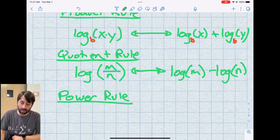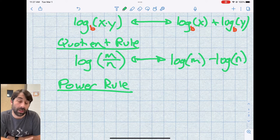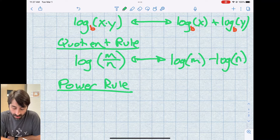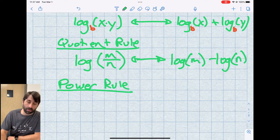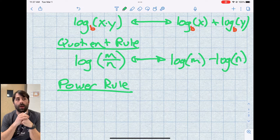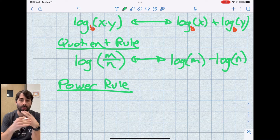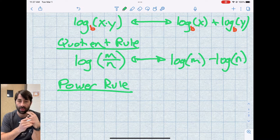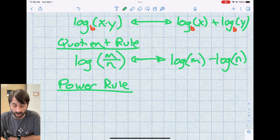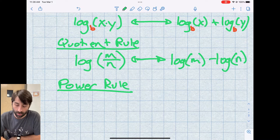And this rule we end up using a lot when we're solving log and exponential functions. What the power rule states is if there's an exponent inside of a log, that turns into a factor. So we end up multiplying the log by that exponent, and the exponent is no longer an exponent. And this is how we're actually able to solve exponential equations is by kind of exploiting this power rule.